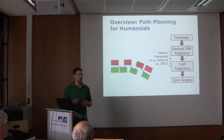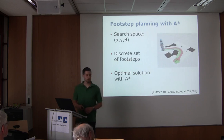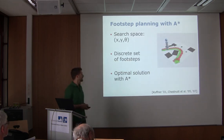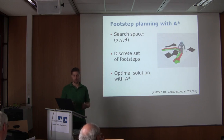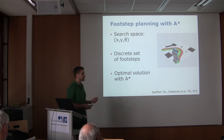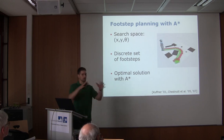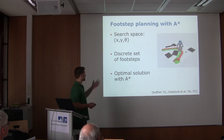The problem is: how can we plan these footsteps so that we can navigate collision-free environments? One method that came up very early is A* search — very popular for planning motions in 2D. Let's just apply it to footstep planning. The search space is in x, y, and theta, because we're planning for foot orientations as well. We have a discrete set of footsteps, which is the branching factor of our search tree.